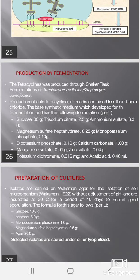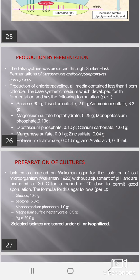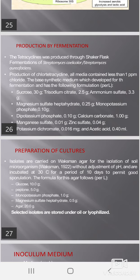Preparation of cultures: Isolates are carried on Waxman agar for the isolation of soil microorganisms without adjustment of pH and are incubated at 30°C for a period of 10 days to permit good sporulation. The formula for this agar is as follows: glucose 10g, peptone 5g, monopotassium phosphate 1g, magnesium sulfate heptahydrate 0.5g, and agar 20g. Stock isolates are stored under oil or lyophilized.